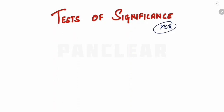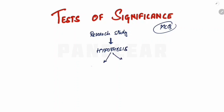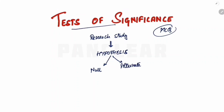So basically, one researcher is going to perform a research study. In the research study, they are going to frame a hypothesis. A hypothesis is a statement. So in the hypothesis, it can be a null hypothesis or an alternate hypothesis. So in the test of significance, it is going to test whether the framed hypothesis is significant or not. So this is the test of significance.